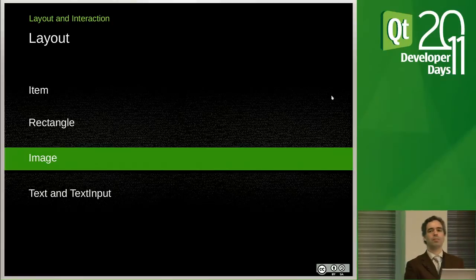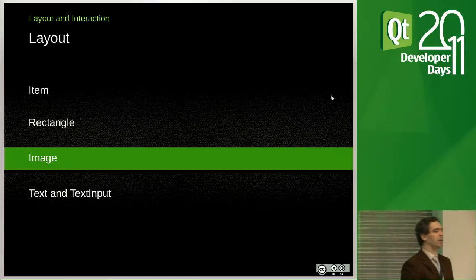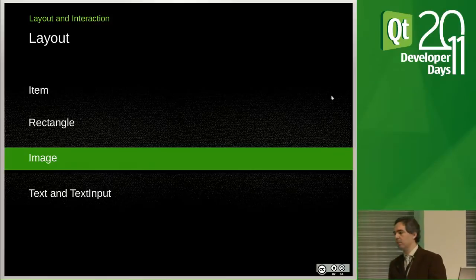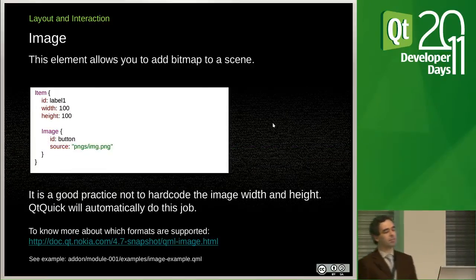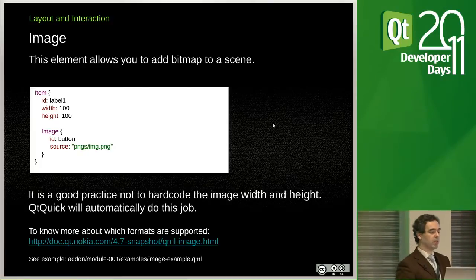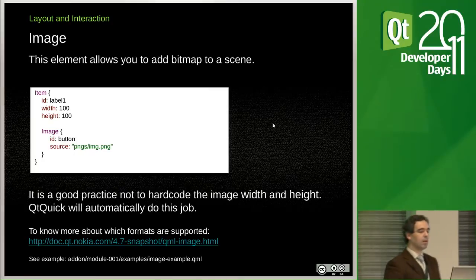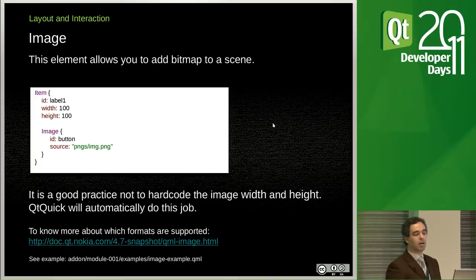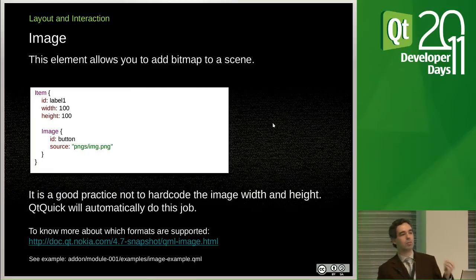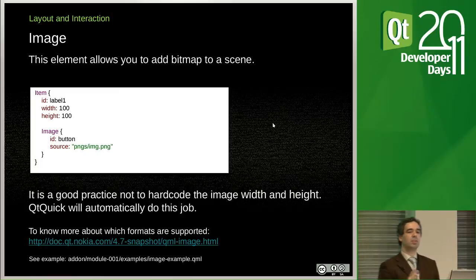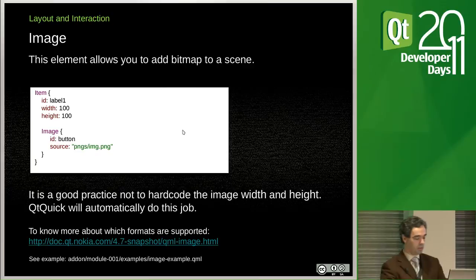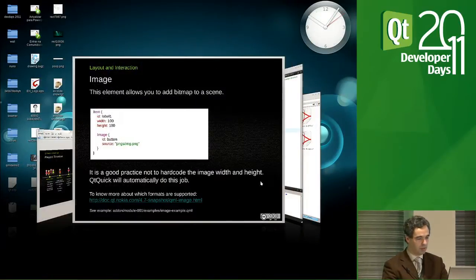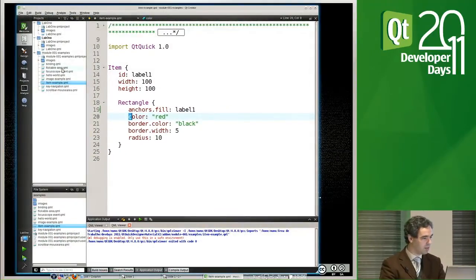For designers, the most important thing you put on a canvas is images — stuff generated elsewhere and placed here. It works very simply: the same way we declared a rectangle, we now declare an image, name it, and declare the source. That's basically it. It's good practice not to put the size — Qt will do it for you, placing the image in a one-to-one ratio, which means it'll be pixel perfect. Though sometimes we want different things — for example, scaling differently — and I'll show you how.